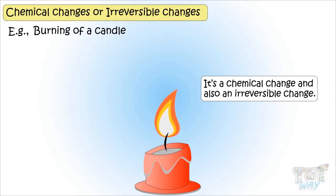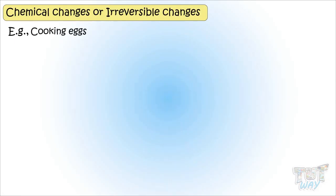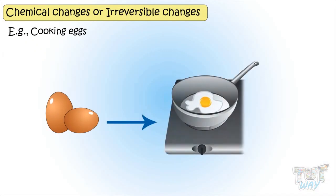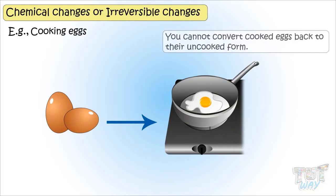Here is another example: cooking eggs. When we cook eggs, a new look of eggs appears and this change cannot be reversed — that is, you cannot convert cooked eggs back to their uncooked form. So it's a chemical change or an irreversible change.